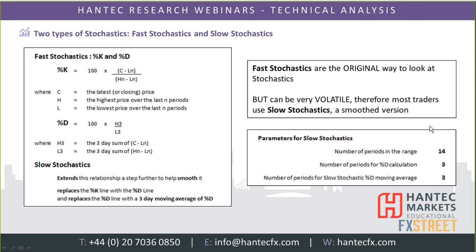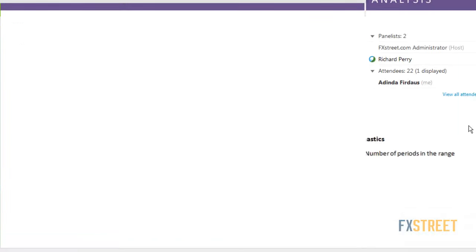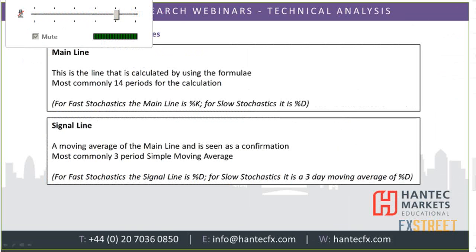You can change the parameters of stochastics, as with these momentum indicators. The best way is to change the number of periods in the range of calculation. Stochastics, like the RSI, use 14 days as your calculation period by default, but you can change that — say 9 or 21. It is each to their own, but as I stress throughout all my webinars, if you change the parameters you need to do your backtesting to make sure the level you use works.